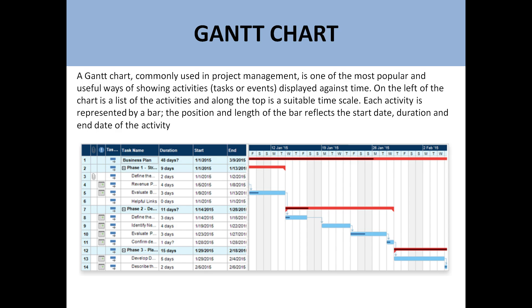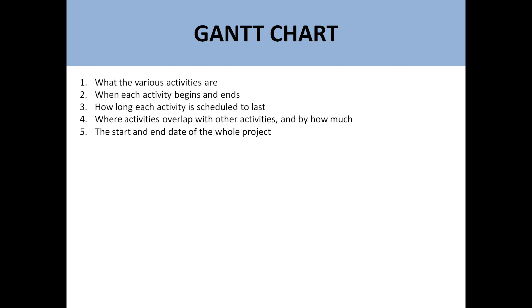It is a very simple and famous way to represent tasks in a Gantt chart, so that we can have an idea of which dates the tasks are starting and on which date they are finishing. Basically, Gantt charts tell you about the various activities in a project, when each activity is starting and when it is going to finish, how long each activity is scheduled to last, where activities overlap with other activities and by how much, and the starting and ending date of the whole project.